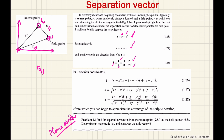In the Cartesian coordinate system, the source point has coordinates (x', y', z'). The separation vector is expressed in Cartesian components accordingly. Its length is the square root of the sum of the squared coordinate differences. Dividing the separation vector by its length gives the unit vector along the direction of the separation vector.